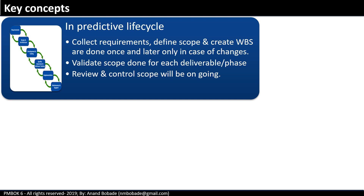Let's go through some of the key concepts. Scope management is done differently in predictive and adaptive projects. In a predictive life cycle, you collect requirements, define scope, and create the work breakdown structure — all done once, and later only in case of changes. Validate scope is done for each deliverable or phase, and review and control scope is an ongoing process.